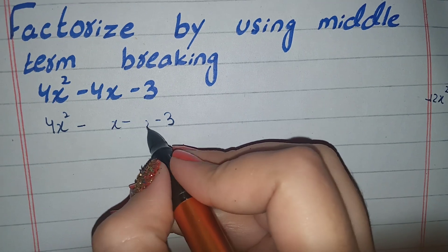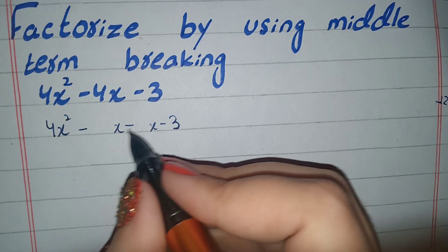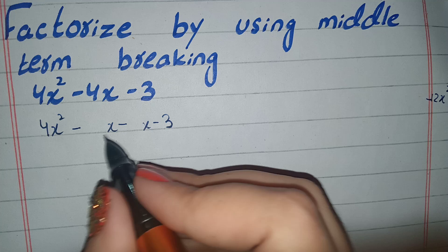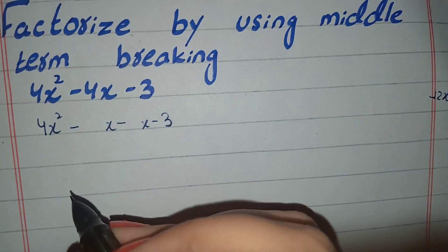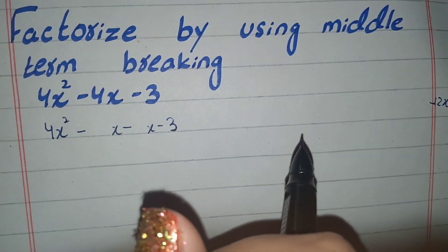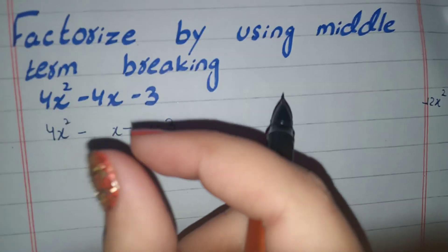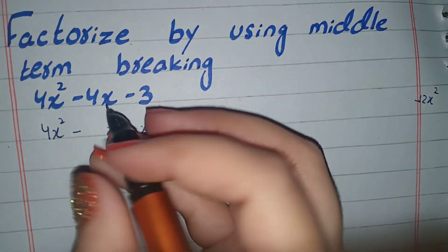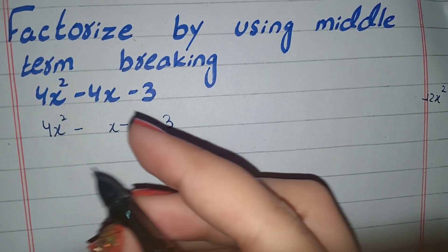Here we have x and here we have x. Now we have the coefficient. We have 2x and 6x, then we have 4x. If we multiply, then we have 12x squared. So we need 2x and 6x — then we have 4x and 1. We need 4x and 3x to give us 12x squared.